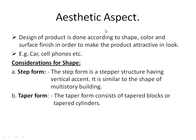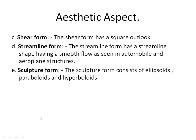The examples are aeroplanes, cars, and cell phones or mobile phones. While designing any product with a view toward aesthetics, considerations are made with respect to the shape, color, and surface finish of the product. The shape of the product should either be a step form — meaning it has steps in vertical ascent, just like a multi-story building — or it may be of taper form, meaning its cross-sectional area changes with respect to length. Or the shape may be of shear form, meaning it should have a square outlook type.